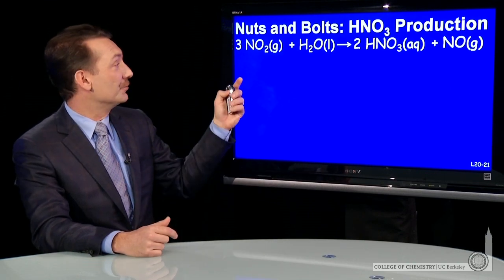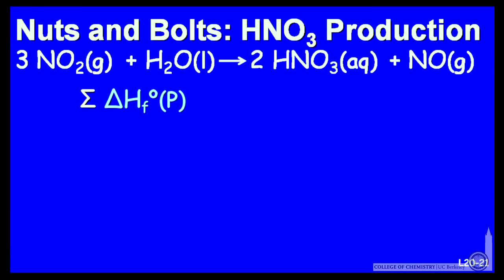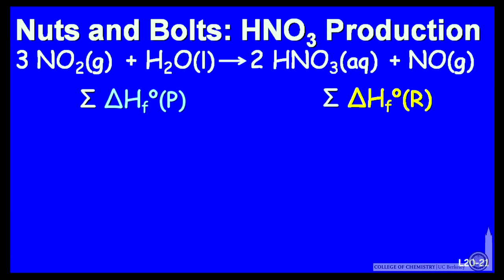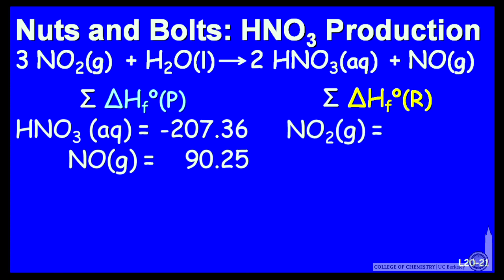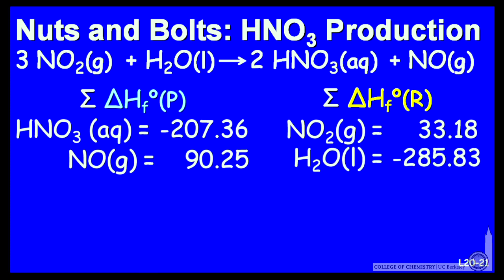So let's do that. The sum of all the product enthalpies of formation, minus the sum of all the reactant enthalpies of formation. Aqueous nitric acid and NO gas are the products. The reactants are NO2 gas and liquid water. Those are their enthalpies of formation.